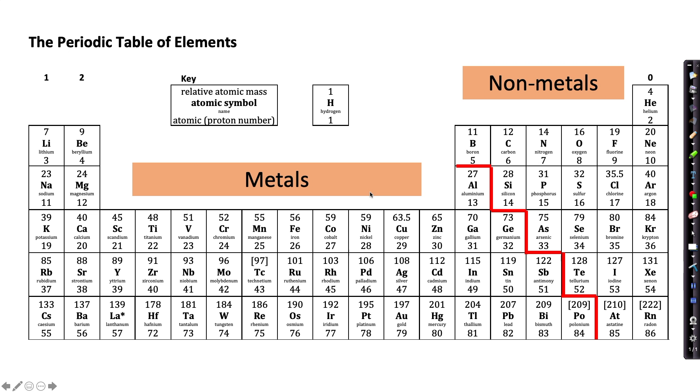So when you look at the metal elements there may be ones that you recognise, for example, copper, iron and gold.